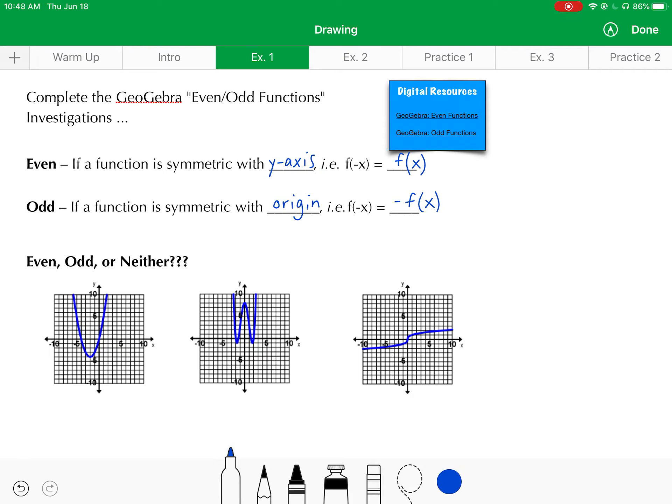So looking at the graphs below here, let's consider these are all three functions. Are they even? Are they odd? Or neither even or odd? The first one on the left there, it's a graph of a parabola. There is no symmetry with the y-axis. There is no symmetry with the origin. So this is neither even nor odd.